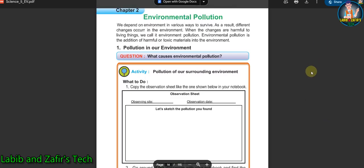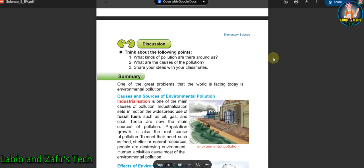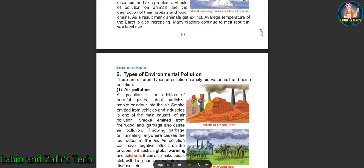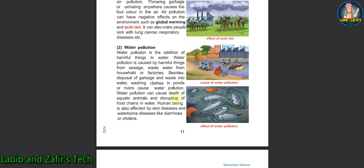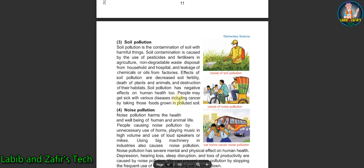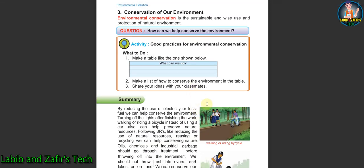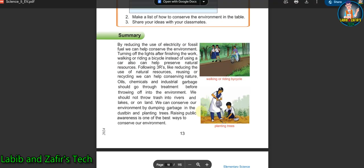In Chapter 2, Environmental Pollution, you will first be able to know about the pollution in our environment — whatever pollution occurs, what are the causes, sources, and effects. There are different kinds of environmental pollution such as air pollution, water pollution, soil pollution, and noise pollution. You can also know the causes and effects of these pollutions, and finally how we can conserve our environment and prevent these kinds of pollution.